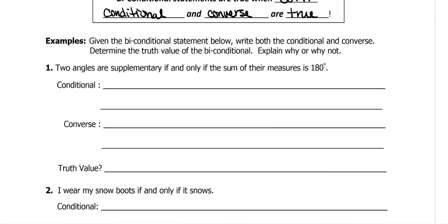Given the biconditional statement below, write both the conditional and converse and determine the truth value of the biconditional — explain why or why not. In a biconditional, they take a conditional statement like: if two angles are supplementary, then the sum of their measures is 180 degrees. They take the 'if' off, the 'then' off, and replace it with 'if and only if.' So this is our hypothesis and this is our conclusion — they just replaced 'then' with 'if and only if' and removed the leading 'if.'